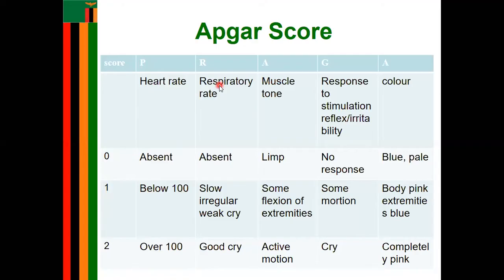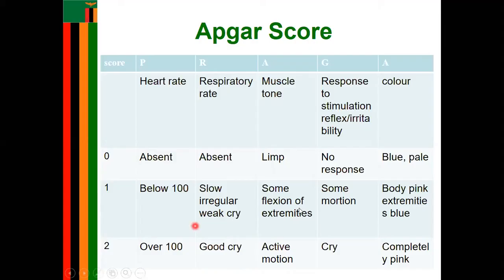For respiratory rate: absent respirations score zero; irregular, weak respirations or weak cry score one; an immediate cry after delivery scores two. For muscle tone: if the baby is limp, score zero; if there is some flexion of extremities, score one; if there is active motion and the baby is active, the perfect score of two is given.